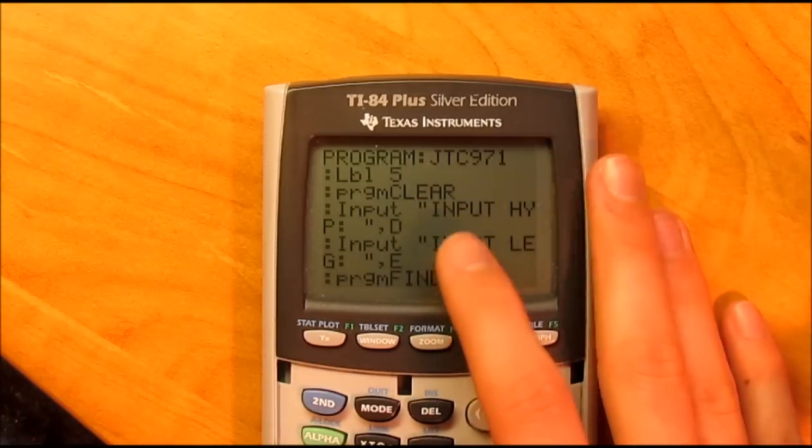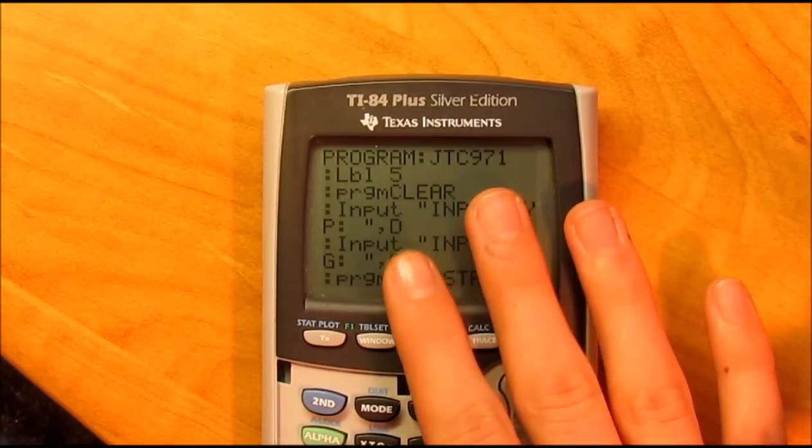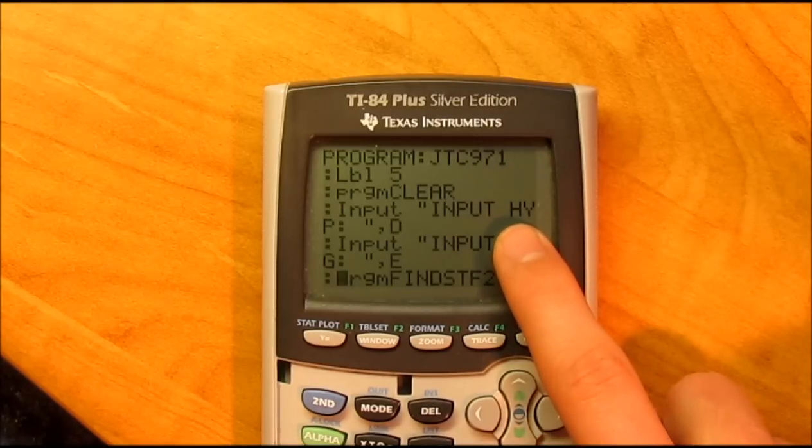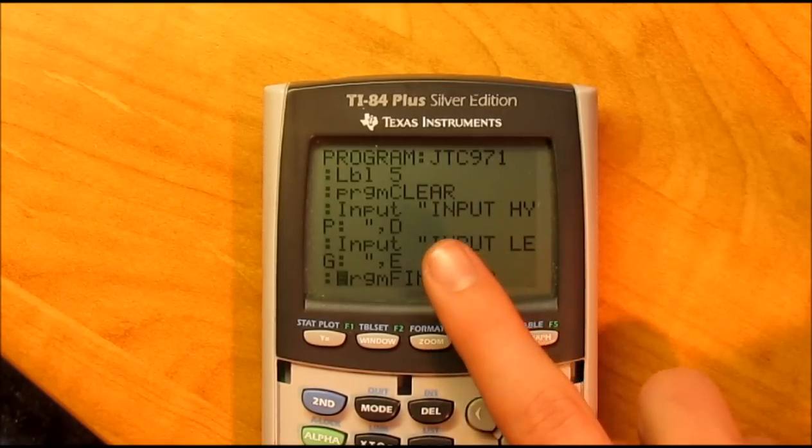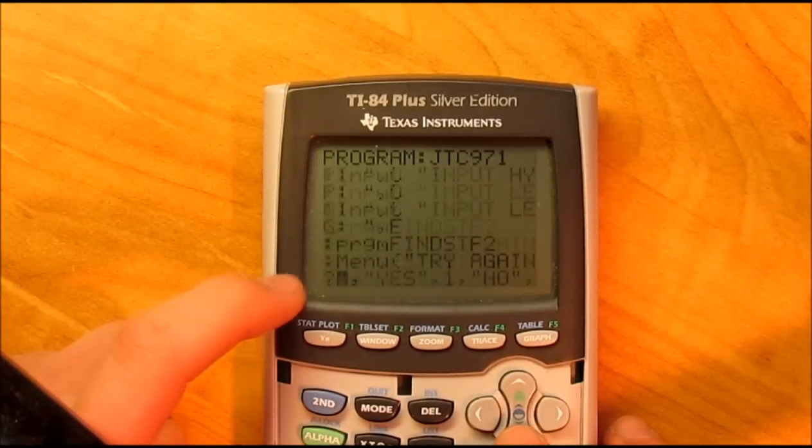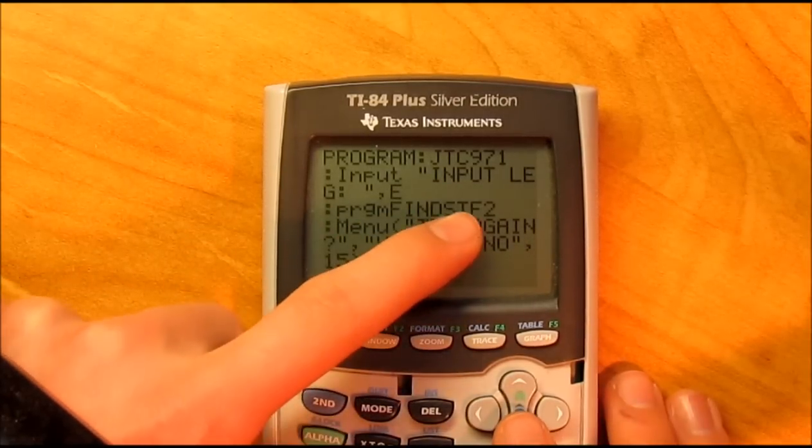This will be hypotenuse and leg, that's what you know. So program clear, input the hypotenuse abbreviated as HYP, stored as D. The leg is stored as E. Then you run program find STF 2.